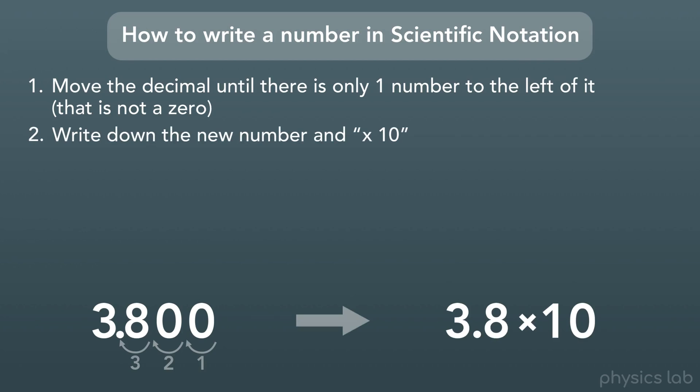Next, we write down that new number, and we multiply it by 10, which is how we write scientific notation. And all we're missing is the exponent above the 10.